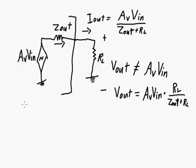So let's say for example, AV is equal to 10, V in is equal to 1 volt, Z out is equal to 50 ohms.